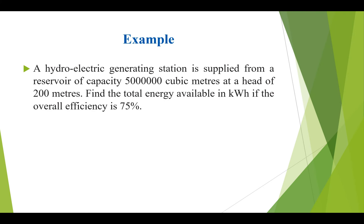The first example is that we have a hydroelectric generating station supplied from a reservoir of capacity 5×10⁶ cubic meters at a head of 200 meters. We need to find the total energy available in kilowatt-hours if the overall efficiency is 75%.